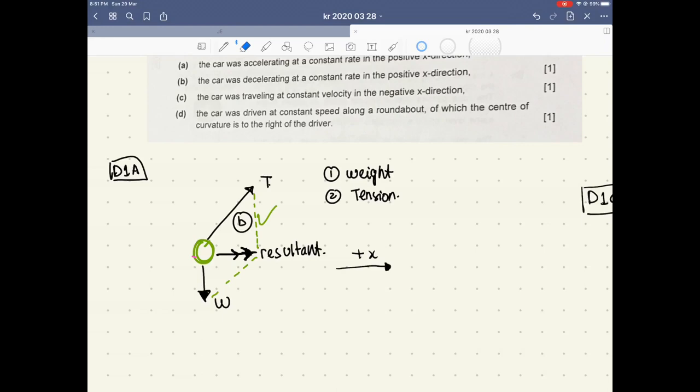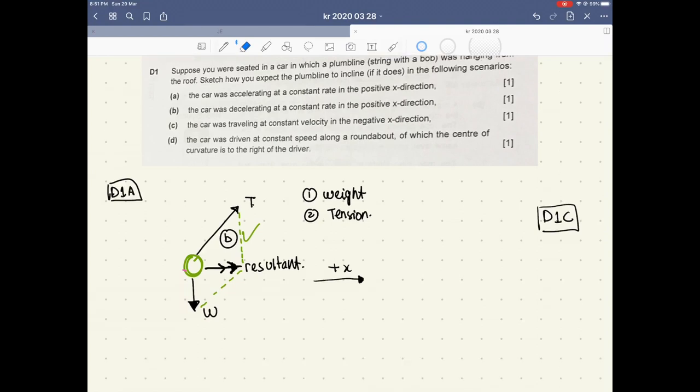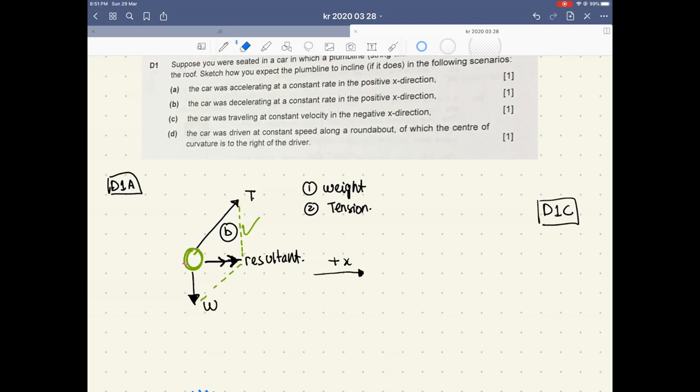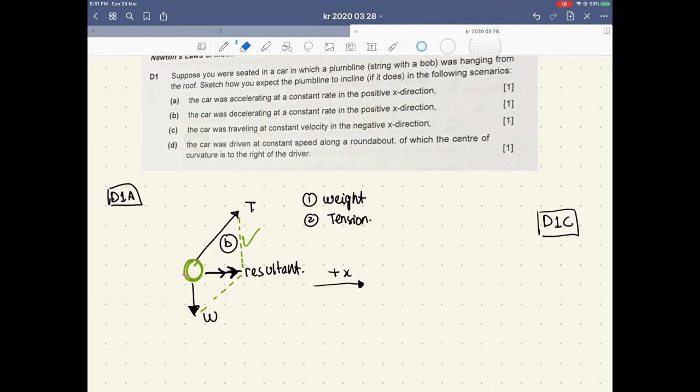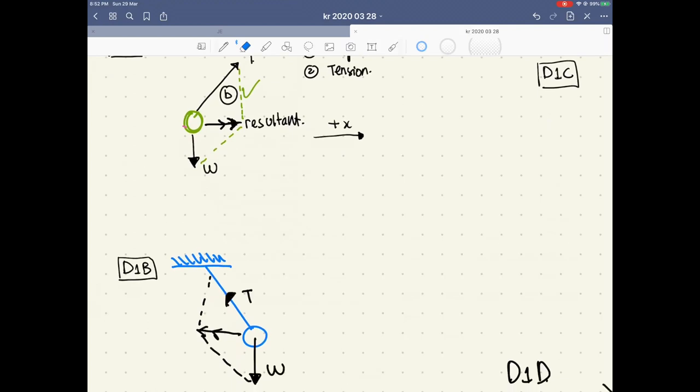How do we know we have weight? First of all, it's a pendulum bob. And whenever they don't mention anything, assume it's on earth with g equals 9.81. How do we know we have tension? Very simple. As long as you have a string on a certain object, then you have tension. There is no friction, and there is no normal, because it's not in contact with the surface.